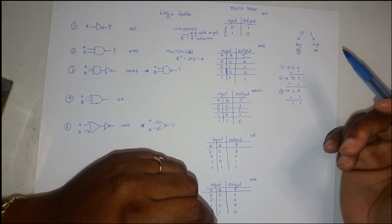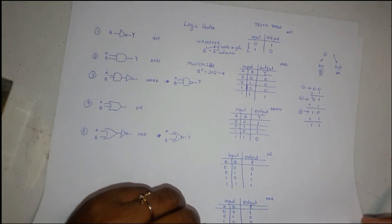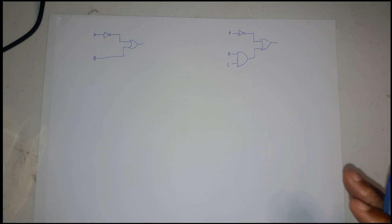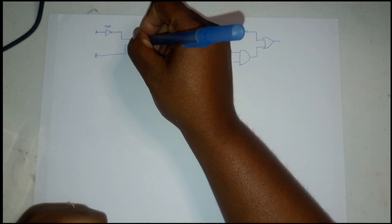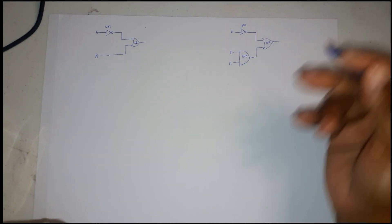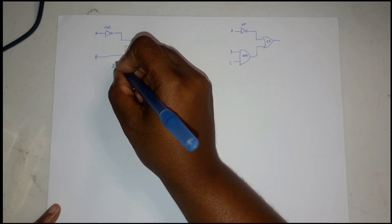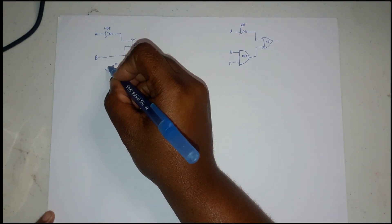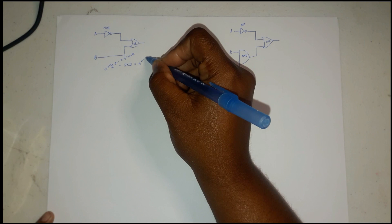Now we're going to do a little circuit setup with logic gates and work out the outcomes. Here we have two different circuits. We first put the names of the logic gates next to them so we don't make mistakes. In this first circuit we have a NOT, an OR, and an AND gate. We have two inputs, so we raise 2 to the power of 2 — that's 4 outcomes.